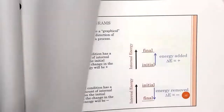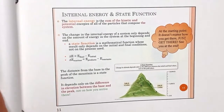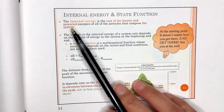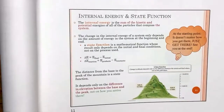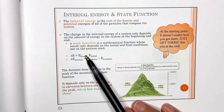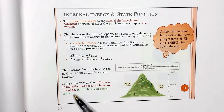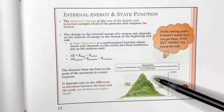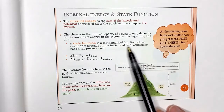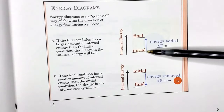Internal energy is the sum of all kinetic and potential energies in the system. It's a state function — we only care about the final value minus the initial value, or products minus reactants. We don't care how we got there, just the difference in energy levels.